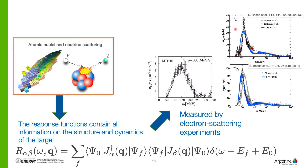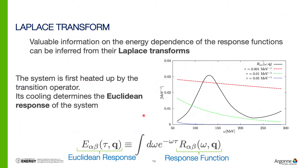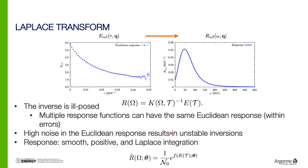For example, the oxygen atom's nucleus has a specific response structure, whereas the calcium atom's nucleus has a different response. The key challenge is that scientists often observe the Euclidean response, while what they are actually interested in is the original response. The relationship between these two is given by the integral of the Laplace transform. To get the response from the observed Euclidean response, one needs to perform this inversion. The inverse problem often has multiple solutions — for the same Euclidean response, one can have multiple response functions, making the problem ill-posed.